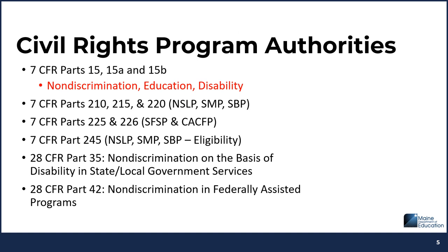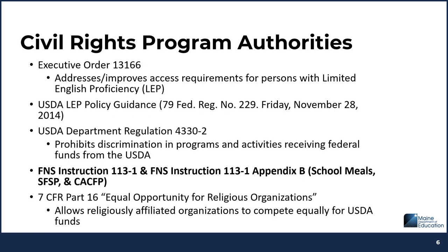Here are the Civil Rights Program authorities. 7 CFR Parts 15, 15A, and 15B include non-discrimination, education, and disability. Additional federal regulations listed here also include regulations for civil rights. Additional civil rights program authorities are listed here including FNS Instruction 113-1 and the Appendix for 113-1. These are additional federal regulations and guidance that have to do with civil rights requirements and child nutrition programs.